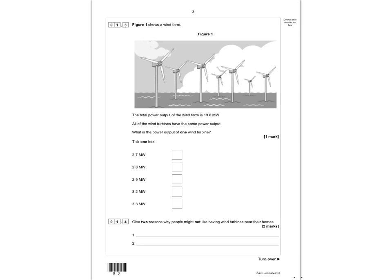The next question is 1.3. Figure 1 shows a wind farm. The total power output of the wind farm is 19.6 megawatts. All the wind turbines have the same power output, and we need to find the power output of one wind turbine. We need to find out how many wind turbines there are — counting gives us 7 wind turbines. So we do 19.6 divided by 7, which gives us 2.8 megawatts. That is the correct answer.